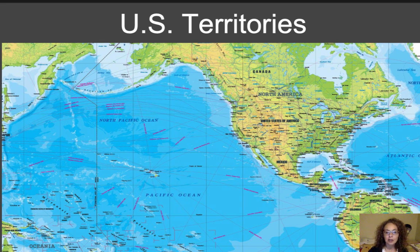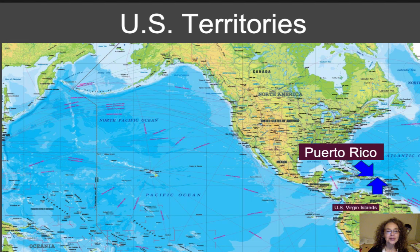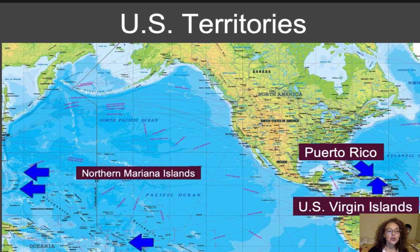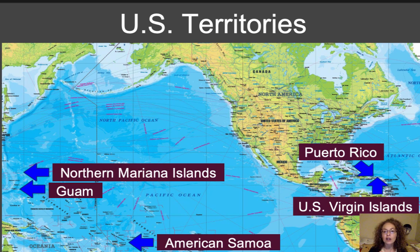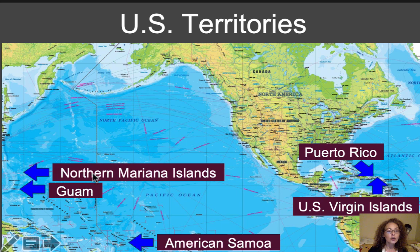There are five U.S. territories: Puerto Rico, U.S. Virgin Islands, the Northern Mariana Islands, Guam, and American Samoa. A U.S. territory is a partially self-governing piece of land under the authority of the U.S. government. Territories are not states, but they do have representation in Congress. The people who live in American Samoa are considered U.S. nationals, and the people in the other four territories — Puerto Rico, U.S. Virgin Islands, Northern Mariana Islands, and Guam — are considered U.S. citizens.